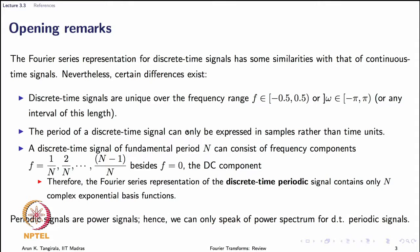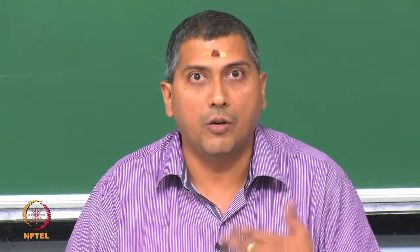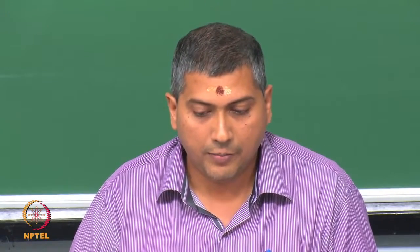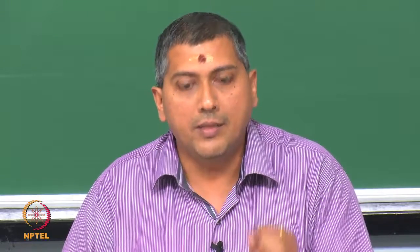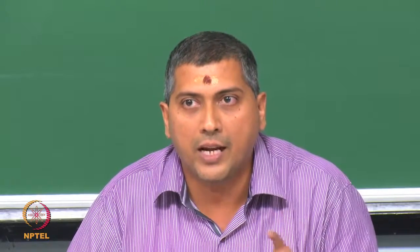The period of a discrete time signal can only be expressed in samples rather than in time units. A discrete time signal of fundamental period N can consist of exactly N frequency components. These frequencies are 1/N, 2/N, up to (N−1)/N, besides the usual DC component. Notice that we switch to lowercase notation for frequency because we are dealing with discrete time signals.